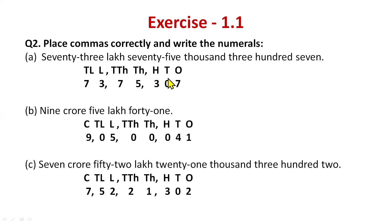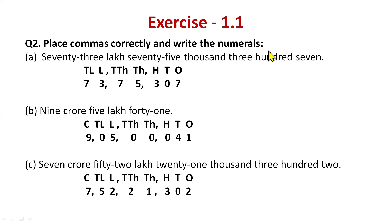Always write the place value chart before writing the answer: ones, tens, hundreds, thousands, ten thousands, lakhs, ten lakhs. Now 73 lakh: 7 comes under ten lakhs, 3 under lakhs. Then 75 thousand: 7 under ten thousands, 5 under thousands. Then 307: 3 under hundreds, 0 under tens, 7 under ones. If it were 70 instead of 7, you'd write zero-seven.